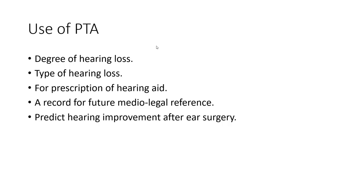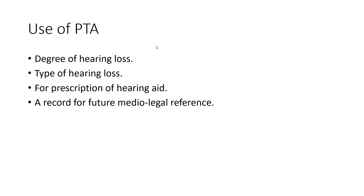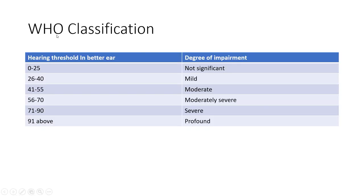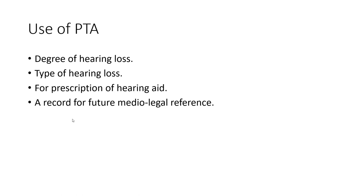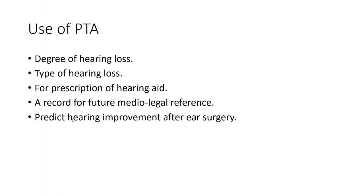Some uses of pure tone audiometry: it identifies the degree of hearing loss — from normal (0–20 dB) to profound (above 90 dB) — and the type of hearing loss. An air-bone gap greater than 15 dB indicates conductive hearing loss. Based on the degree of hearing loss, a hearing aid can be prescribed. The audiogram also serves as a medical-legal record, and can predict hearing improvement after ear surgery.